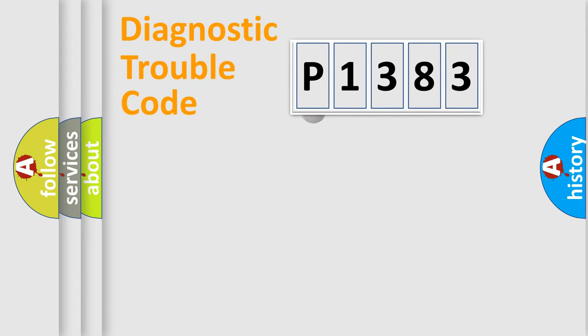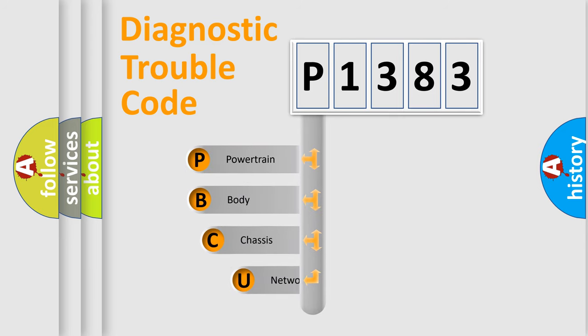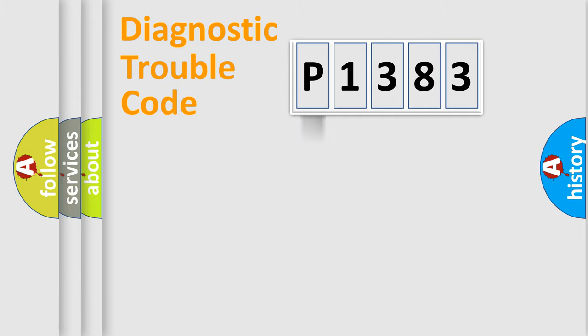First, let's look at the history of diagnostic fault code composition according to the OBD2 protocol, which is unified for all automakers since 2000. We divide the electric system of automobile into four basic units: Powertrain, Body, Chassis, and Network.